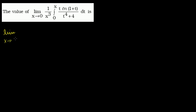Lucky for us, this problem isn't just about solving this integral. It's actually about evaluating this limit. If we rearrange this expression a little bit, it might become obvious how to approach this problem. Multiplying by 1 over x to the third is the same as dividing by x to the third. So this is the integral from 0 to x of t natural log of 1 plus t, all of that over t to the fourth plus 4 dt, all over x to the third.